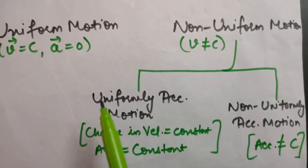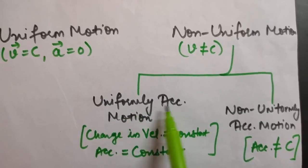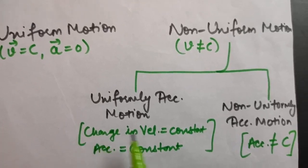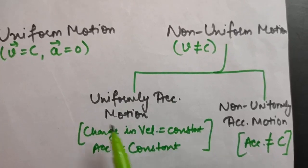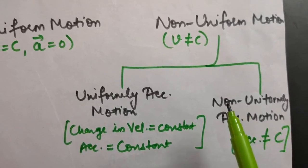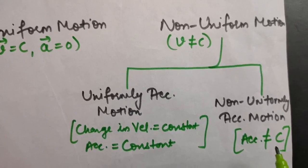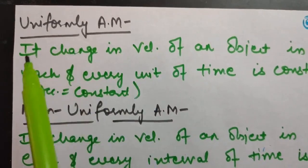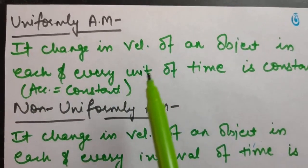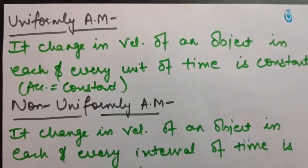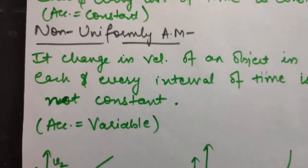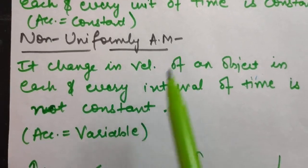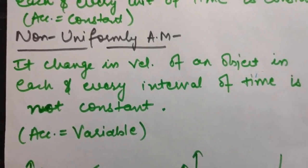Non-uniform motion has two types: uniformly accelerated motion and non-uniformly accelerated motion. In uniformly accelerated motion, the change in velocity in each unit of time is constant, so acceleration is constant - note that change in velocity is constant, not velocity itself. In non-uniformly accelerated motion, acceleration is variable.